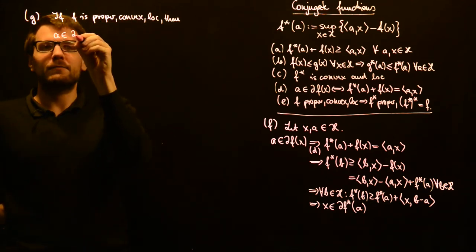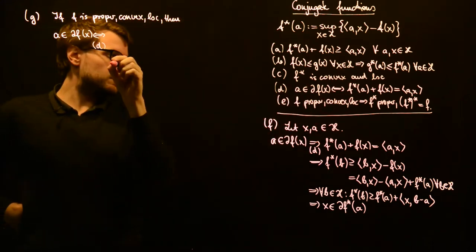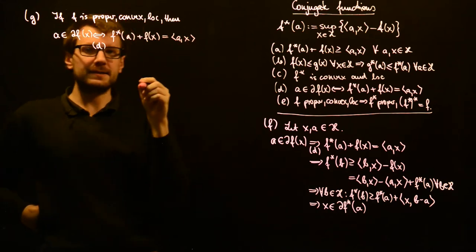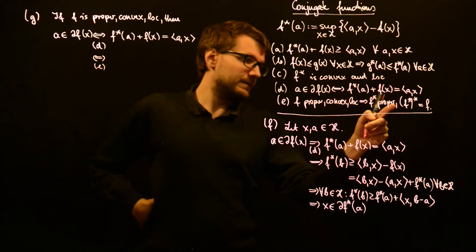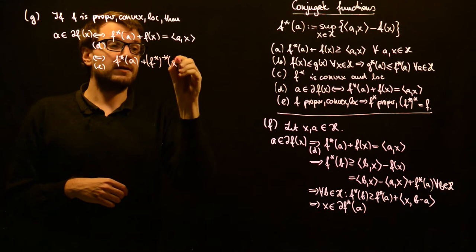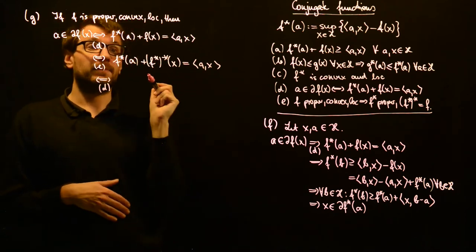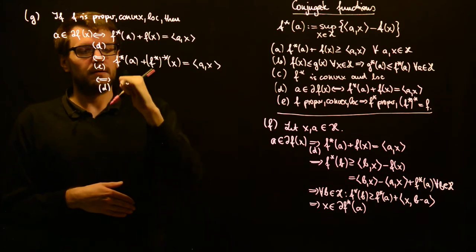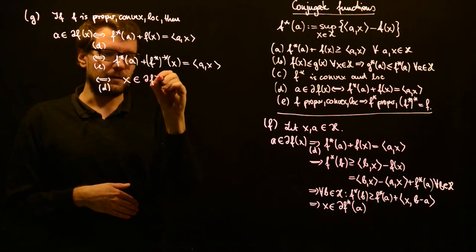So: a in ∂f(x) is equivalent, as written in property D, to f-star of a plus f of x equals the inner product of a with x. This is equivalent — now using property E — because f-star-star equals f, we can replace f with f-star-star at the same point. Using property D again, this time with f-star, we get that x is in the sub-differential of f-star at a.